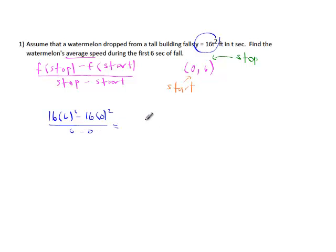So 16 times 36 divided by six. When you punch all that into your calculator, you get 96. And since we're falling, we're talking about feet per second.